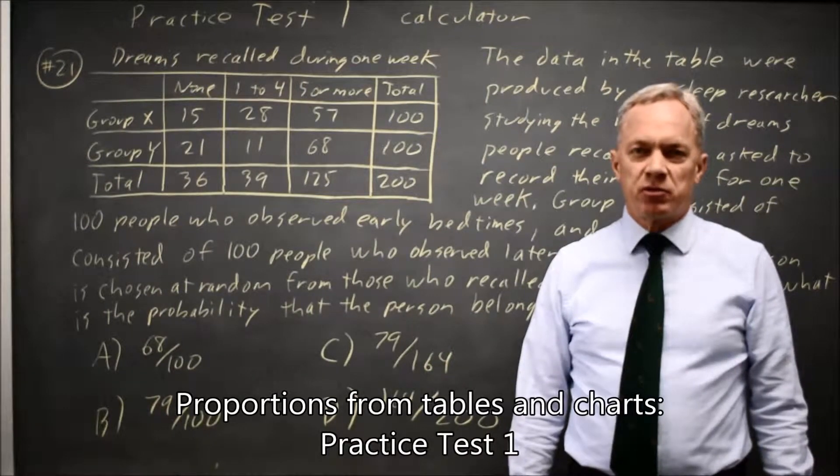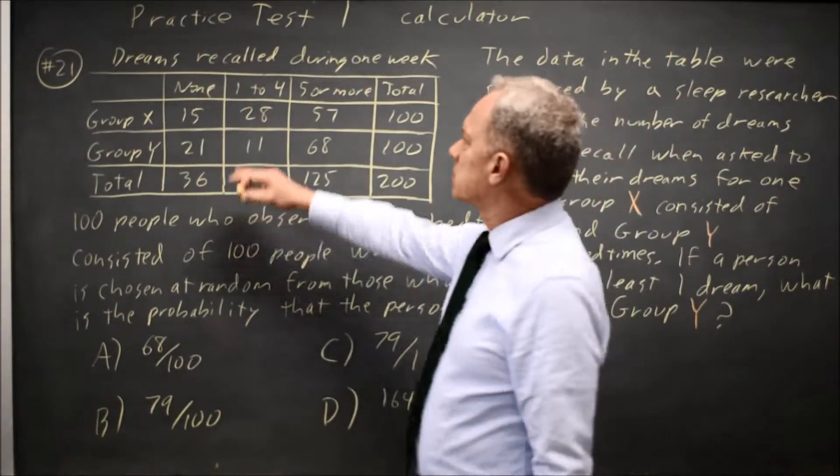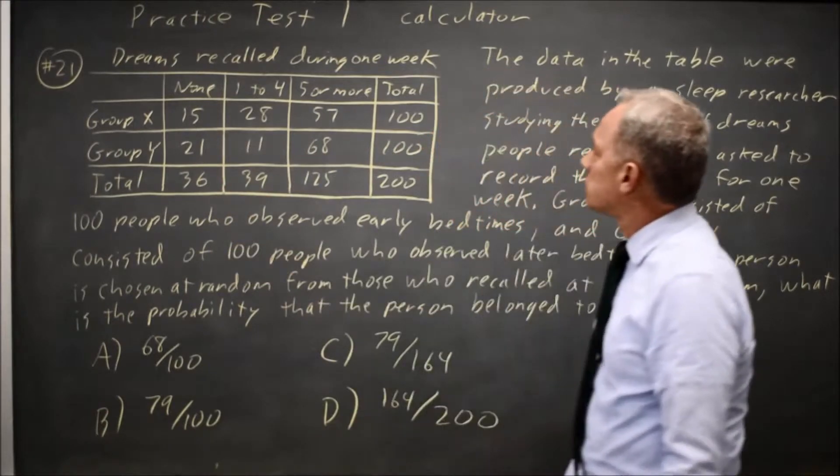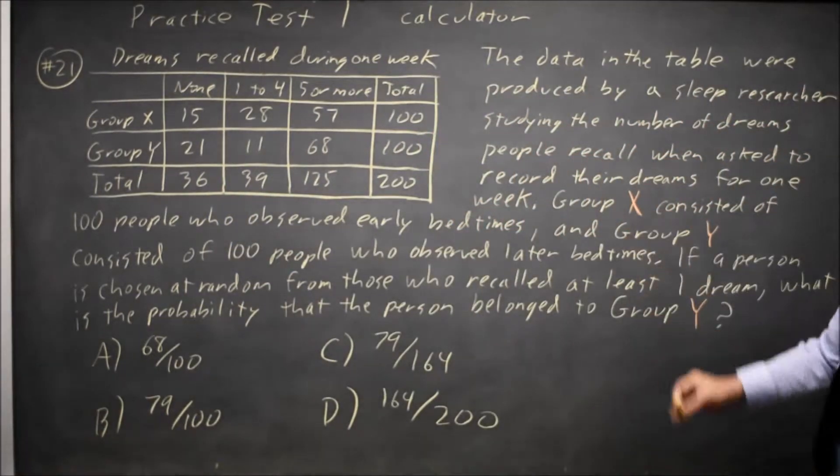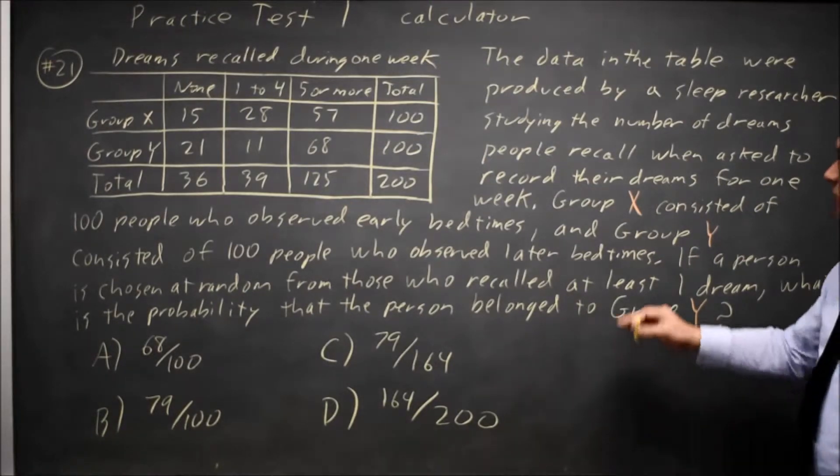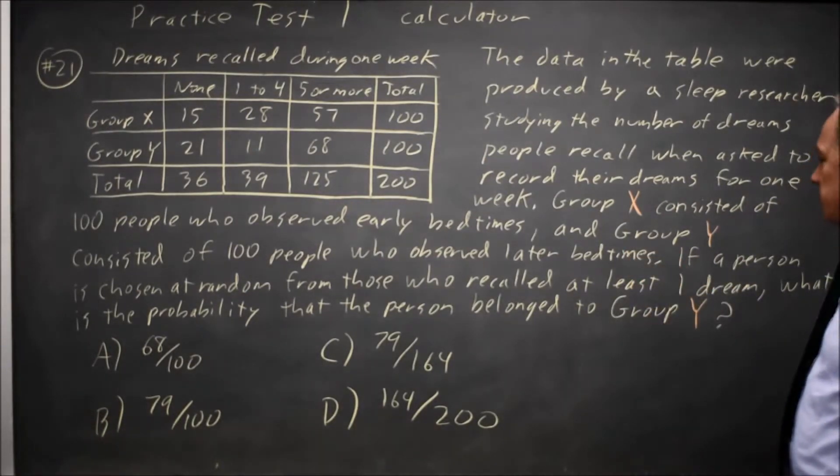This is calculator question number 21 from Practice Test 1. The College Board gives us a table of data for dreams recalled during one week. Group X is those observing early bedtimes, and Group Y is those with late bedtimes.